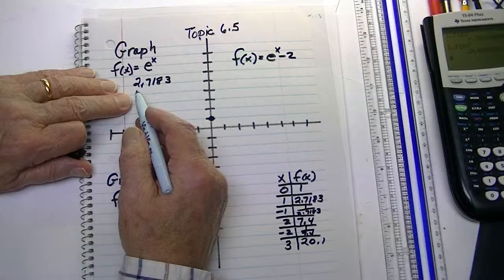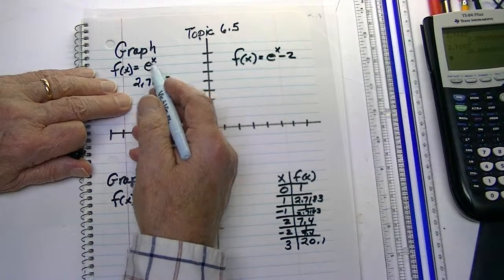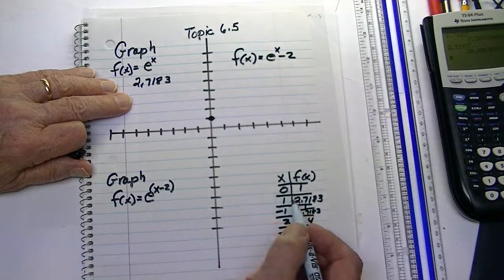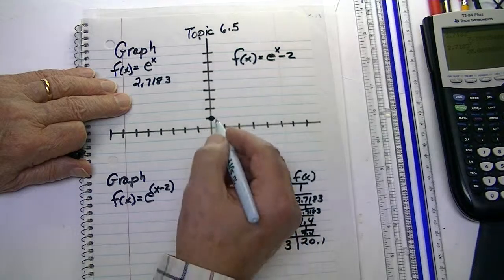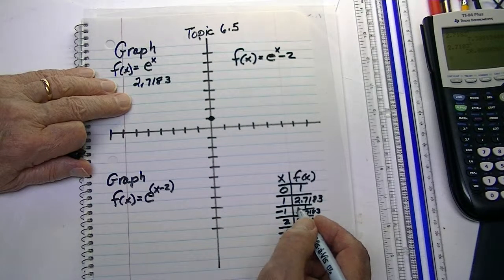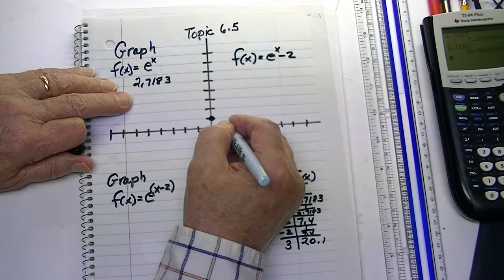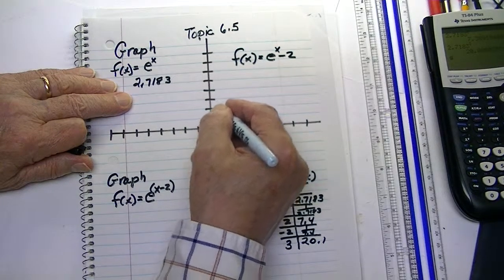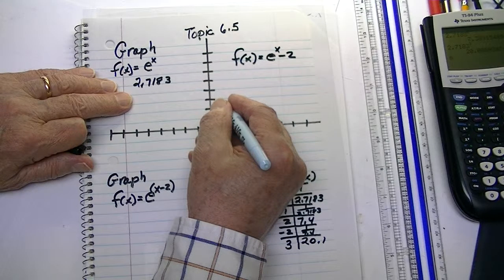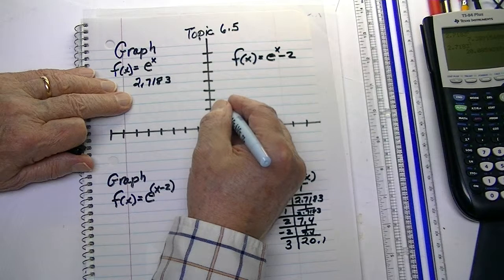then this goes as a dot here at 1. And remember, all these values, anything to the 0 power is going to be 1. Now, if x is 1, which is right here, then our value is 2.7, and a little bit of a decimal there, so 1, 2, 2.7 is about there.